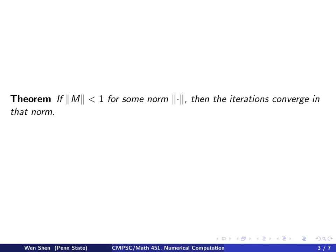So here's the theorem: if the norm of this M is less than 1 for some norm, then the iterations converge in that norm. I want to catch your attention of the following fact, that the convergence only depends on this coefficient matrix M, not depending on the vector y.